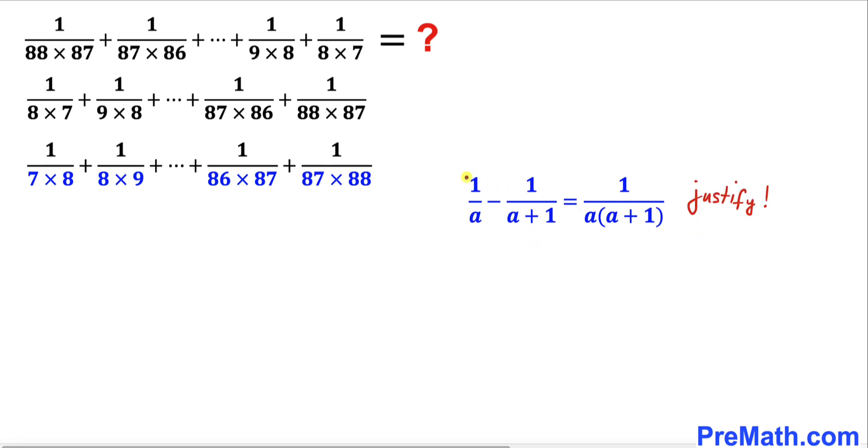Let's do cross multiplication. We can see 1 times a plus 1 gives us a plus 1. Then put a minus sign. Cross multiply this way, which gives us a. Divided by the product of these denominators.